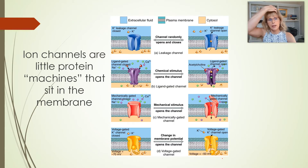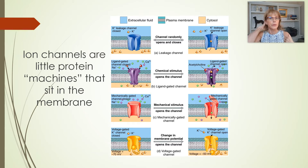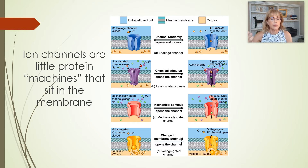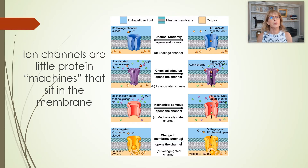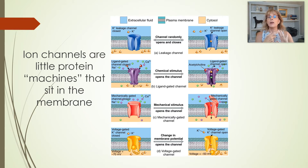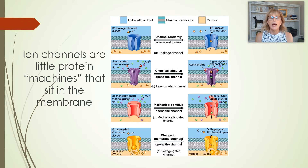Ion channels are little protein machines that sit in the membrane, like a tunnel through the membrane. Gated channels are tunnels that have a gate — when the gate is shut things can't go through, and when it's opened things can go through. For example, a voltage-gated sodium channel is a channel that opens and closes, allows sodium through when opened, and what opens it is voltage — the electricity across the cell membrane.